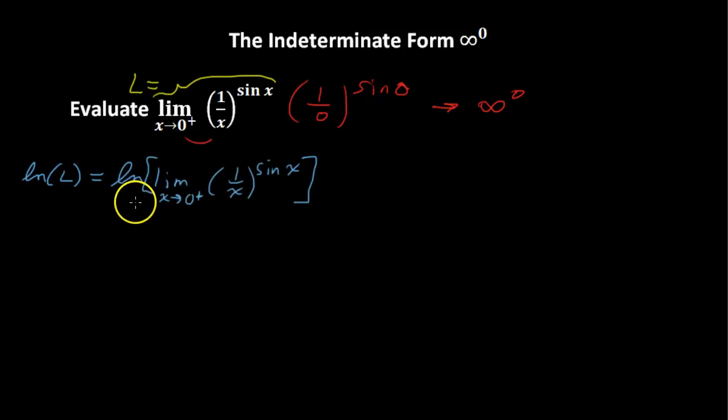And when we have the natural log of the limit of a function, we can write that as the limit of the natural log of that function. And now that we have the limit of the natural log of the function, what we want to do is rewrite this part inside. So the natural log of 1 over x raised to the power of sine of x. So let's do that.